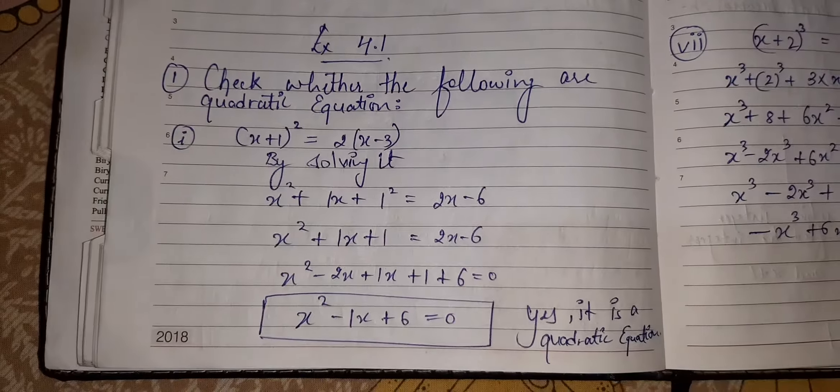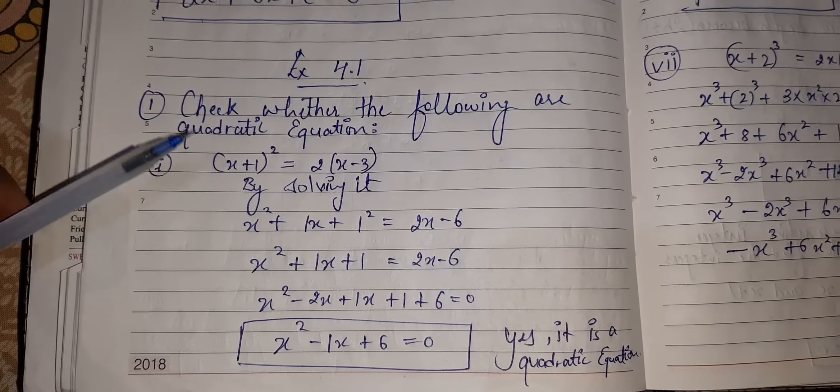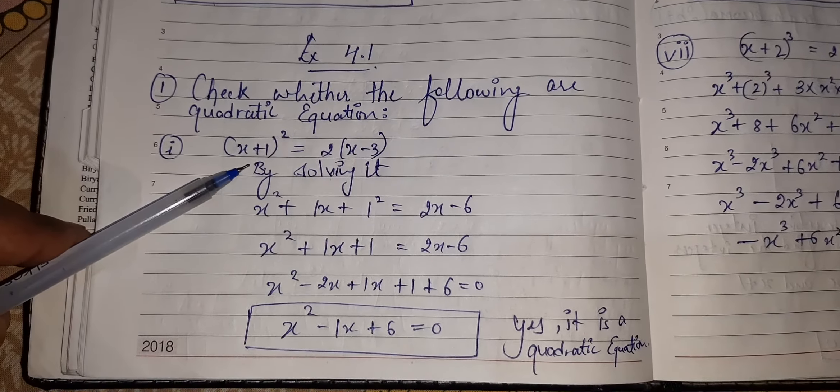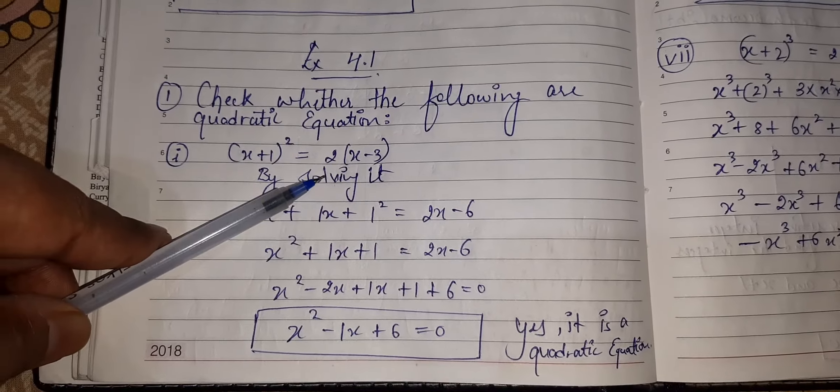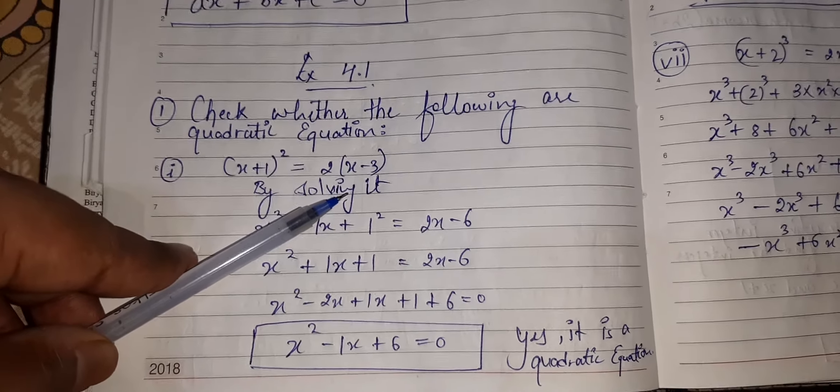Starting with exercise, exercise 4.1. Check whether the following are quadratic equations or not. X plus 1 whole square is equal to 2X minus 3.